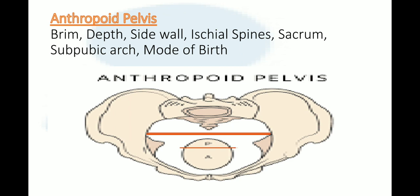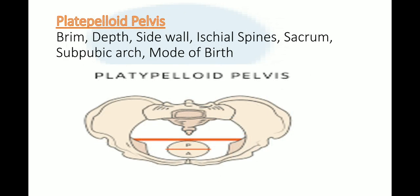The mode of delivery for anthropoid pelvis is vaginal — either forceps, spontaneous occipital posterior, or occipital anterior position. Now, the last type is platyploid, which occurs in only 3 percent of women. The brim is flattened anteroposteriorly and wide transversely. The depth is shallow. The sidewalls are straight and the ischial spines are blunt or widely separated.